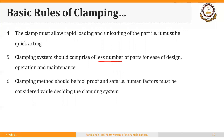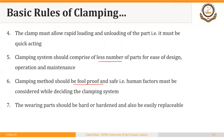The clamping method should be foolproof and safe, and human factors must be considered while deciding the clamping system. Finally, wearing parts should be hard or hardened and also easily replaceable. If there is a wearing surface, heat treatment or another operation should be used to harden that surface so it doesn't wear out, giving the jig or fixture a longer service life.